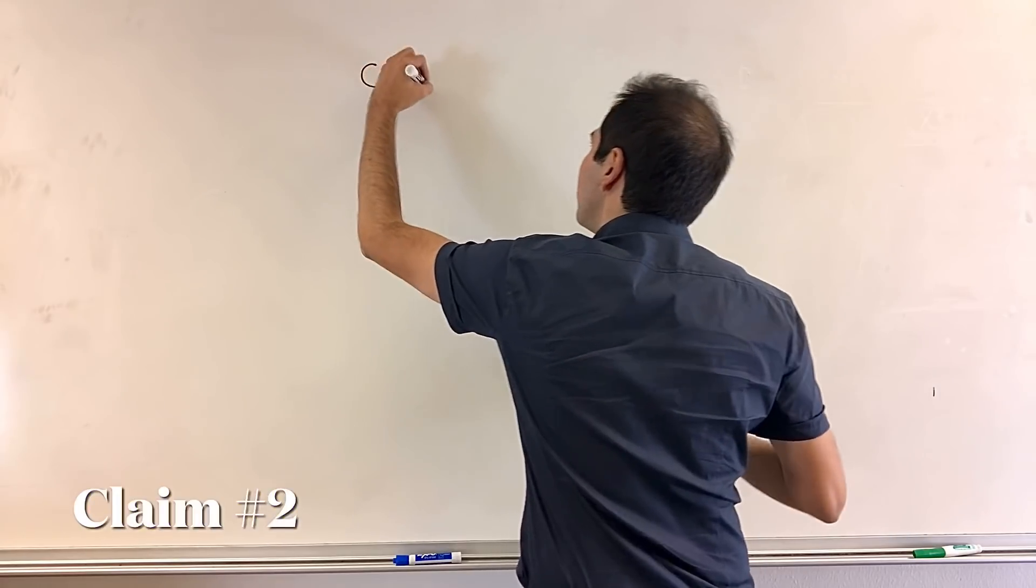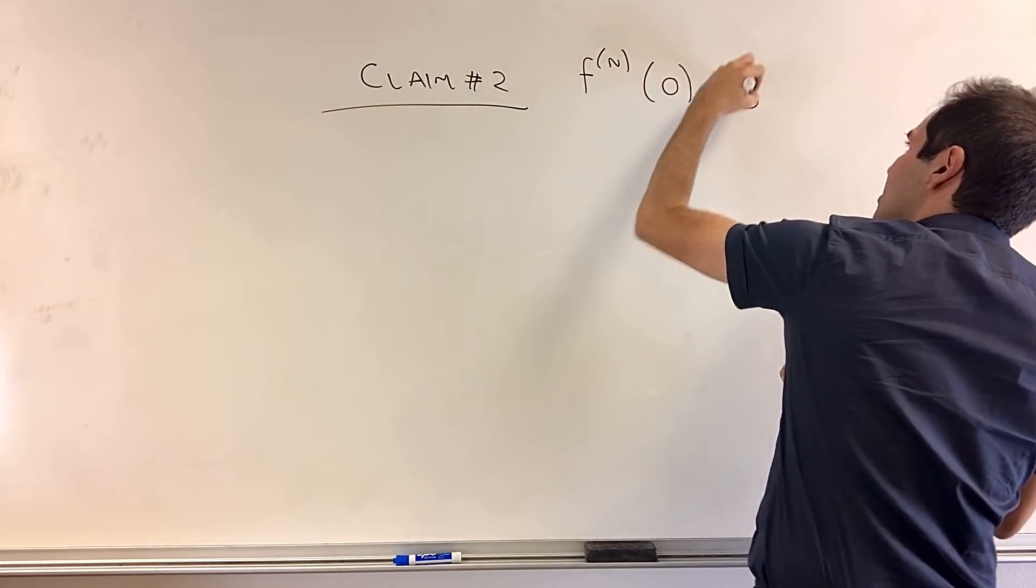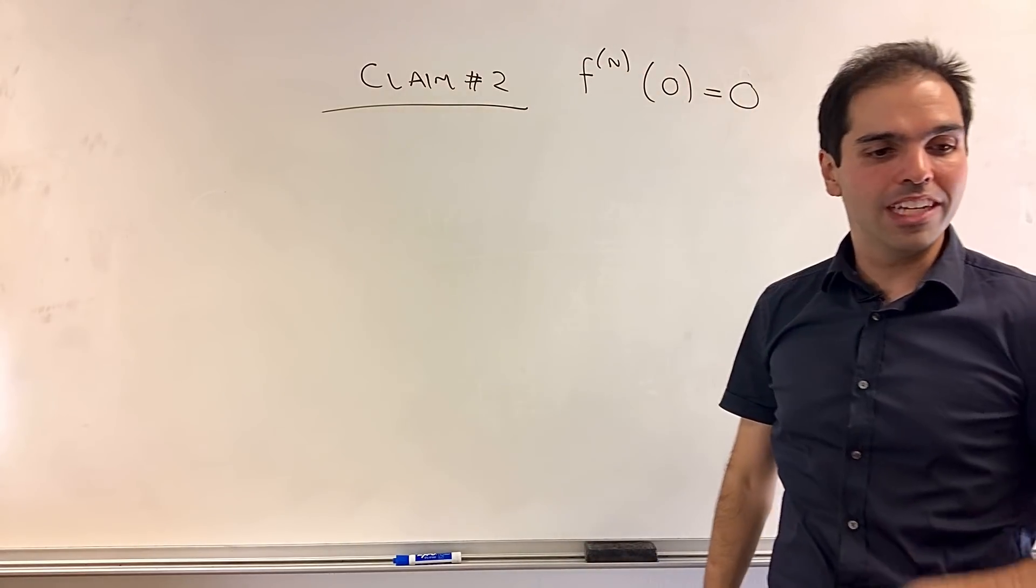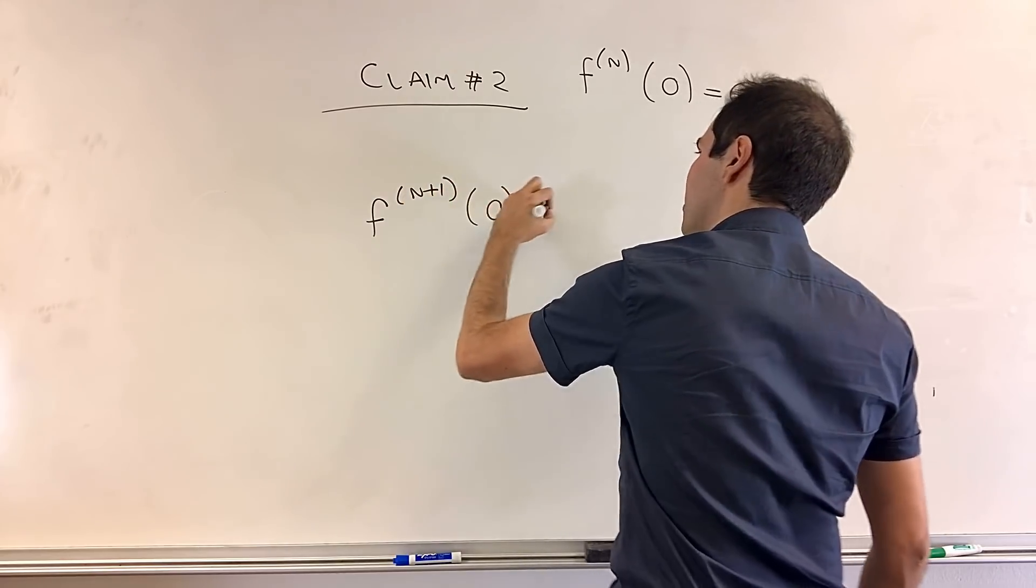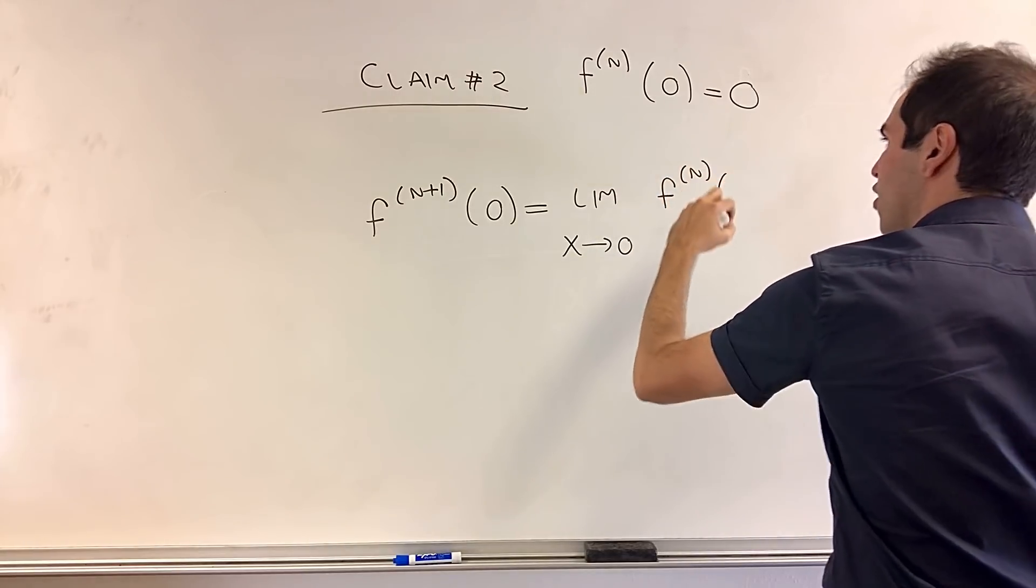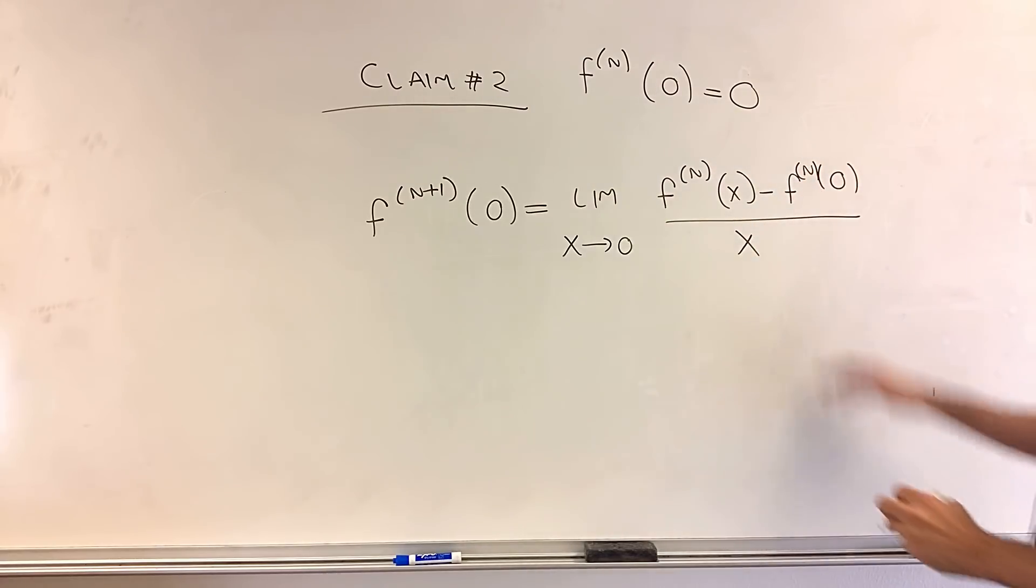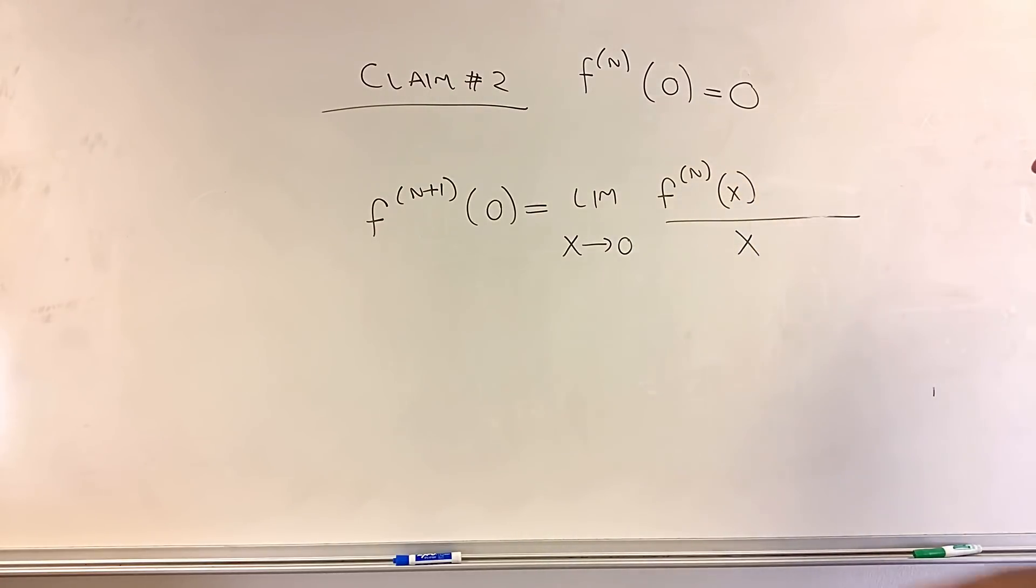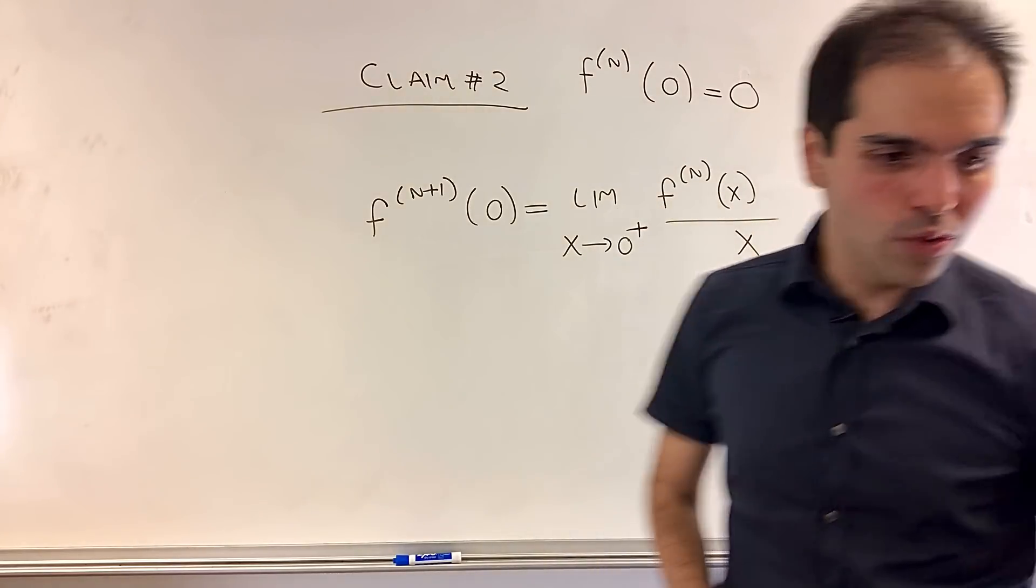And now claim number 2. So let's show that f n at 0 equals 0, and here again, you prove it by induction. So we've shown that f prime of 0 equals 0, and now what is f to the n plus 1 of 0? That is the limit as x goes to 0 of f n of x minus f n at 0 over x. But by inductive hypothesis, this is 0.